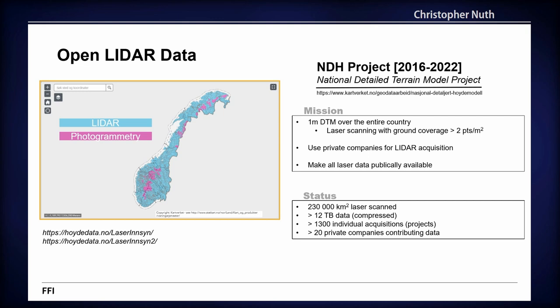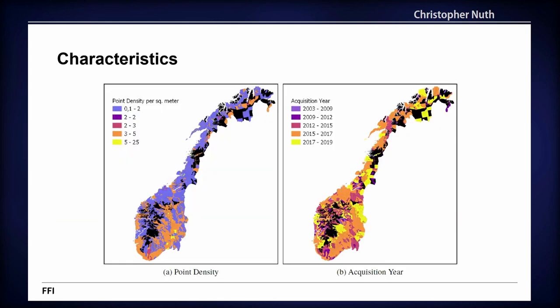There are 12 terabytes of compressed data — double compression, so not just LAS files but then compressed again. 13,000 individual projects, each representing an acquisition from one flight. Private companies are acquiring, processing, and submitting data back to the mapping authority. The highest acquisition densities are usually where populated places are, and along corridors with roads, rivers, landslides, and other features.